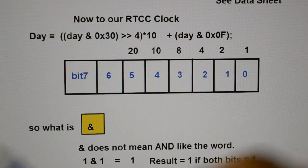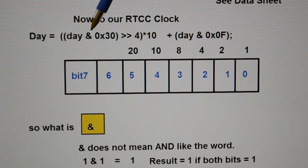Close that down. Right, so this is back to the clock. Right, so to convert the data from the RTCC, the code is day and 0x30, shift 4, plus day and 0x0F. What on earth does that mean? So, first of all, you need to understand what an AND is.